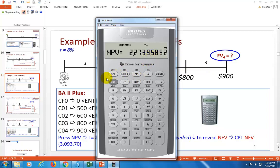That's not what we need. Let's scroll further to reveal NFV, which is net future value. Then you click compute. And that's your result: 3,093.70, approximately.